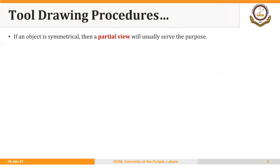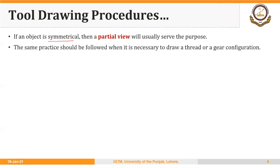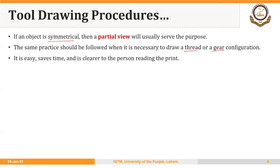One important point to consider is the concept of partial view in engineering drawing. If an object is symmetrical, then a partial view will usually serve the purpose. For example, when drawing a thread or a gear that is generally symmetric about a certain axis, a partial view will serve the purpose. We don't need to draw the whole thread or whole gear. It saves time and is clearer to the person reading the drawing.